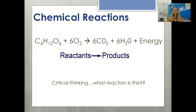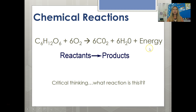Let's make sure you really understand this. In another equation, glucose and oxygen are coming in, and carbon dioxide, water, and energy are being made — so it's the opposite of the reaction we just looked at. Glucose and oxygen are our reactants; carbon dioxide, water, and energy are our products. And critical thinking time — what reaction is this? It is the chemical equation for cellular respiration.